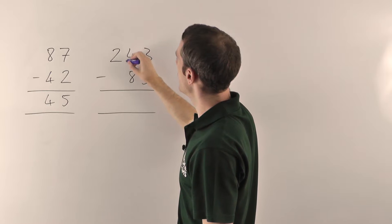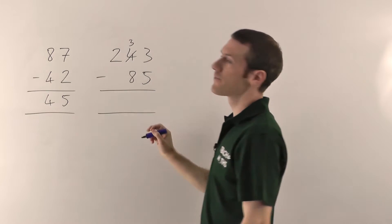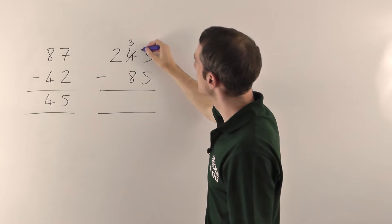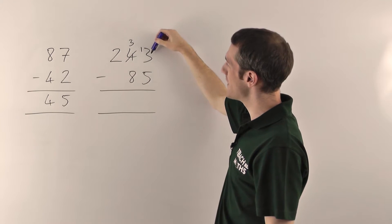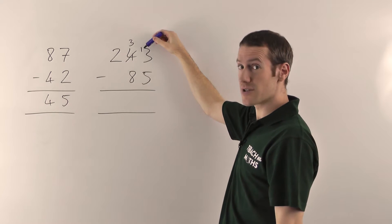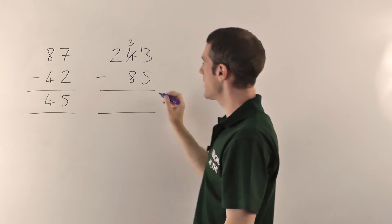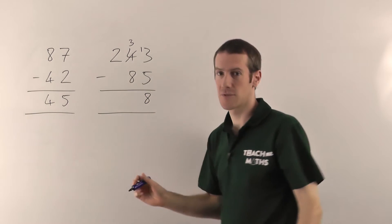So you knock the 4 down by 1. The 4 goes down to a 3 and then you add 1 onto this column, so that goes down by 1 and you put the 1 there which makes this 3 into a 13. Now you can do the subtraction. 13 minus 5 gives you 8.